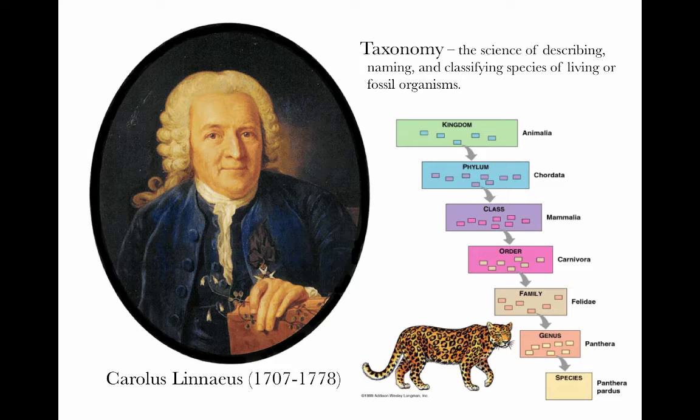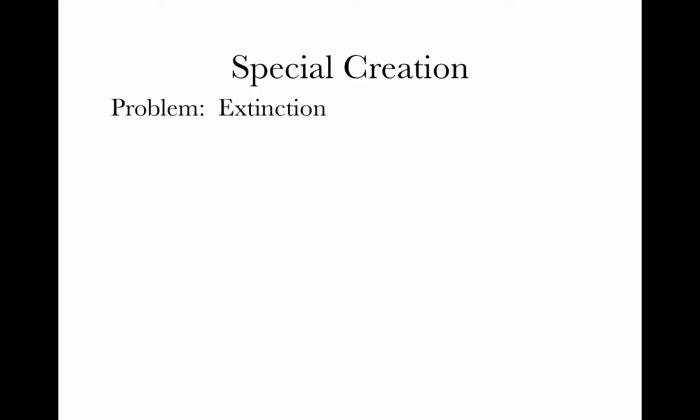Linnaeus came up with a system to name this diversity, one that we still use: kingdom, phylum, class, order, family, etc. At the time of Linnaeus, people believed in special creation. And these series of, say, maples or foxes created some problem for it. But a bigger problem was perhaps extinction.